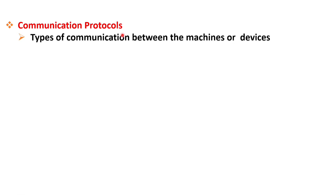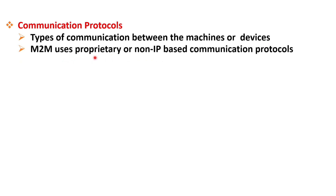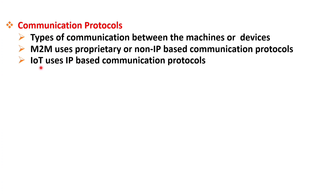Now let's discuss the communication protocols used by both systems. M2M uses either proprietary or local communication protocols applicable only to the deployed devices, or non-IP based communication protocols for communications within the M2M area networks. On the other hand, IoT communication uses mostly IP-based communication protocols which can transmit and receive data over long distances using the internet.